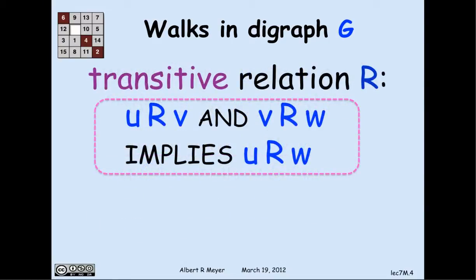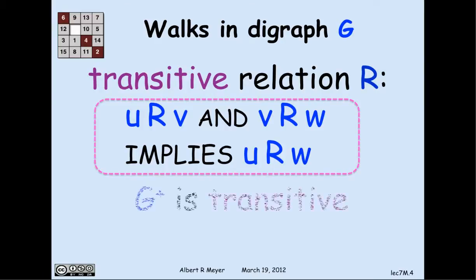A relation R on a set — that is, R is relating elements where the domain and codomain of R are the same — has the transitivity property if u R v and v R w implies u R w. A relation that has that property is said to be transitive.